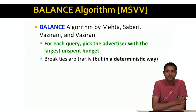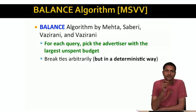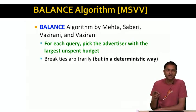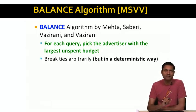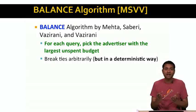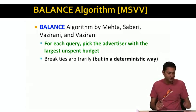It's a very simple algorithm called the balance algorithm, and it uses a very simple heuristic. For each query, it assigns that query to the advertiser with the largest unspent budget — or the largest balance, hence the name. If there's a tie — for example, if there are two advertisers each with an equal balance — then the balance algorithm breaks ties arbitrarily but in a deterministic manner.